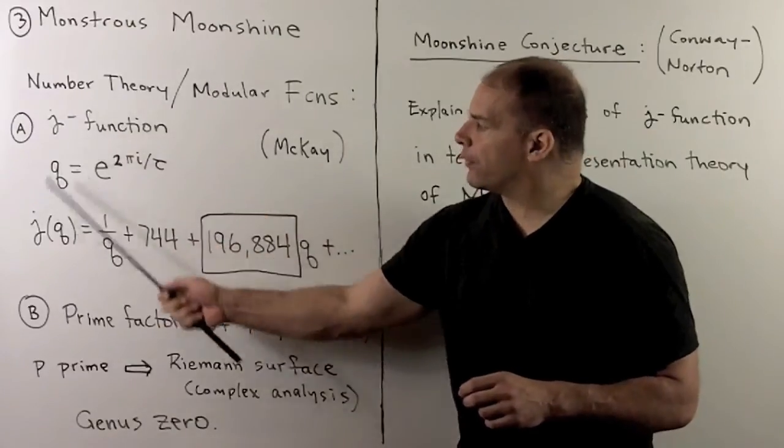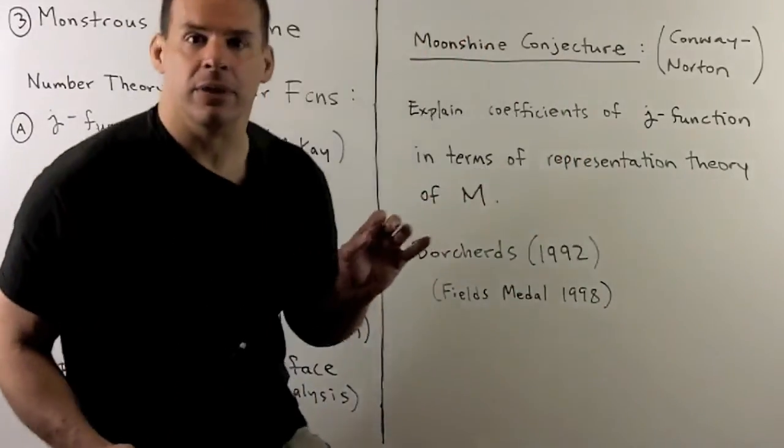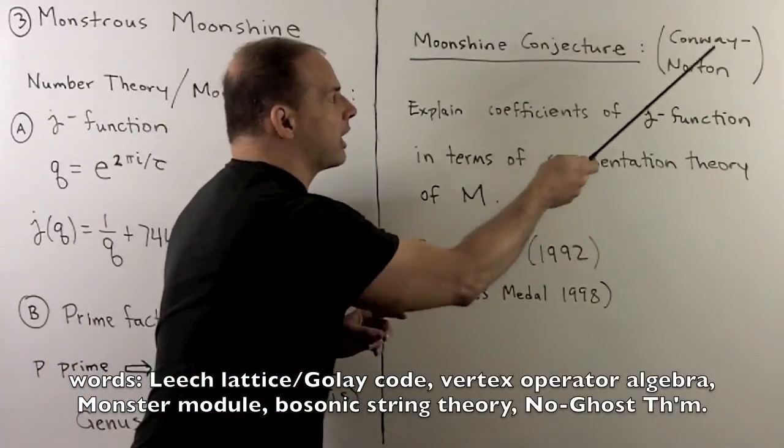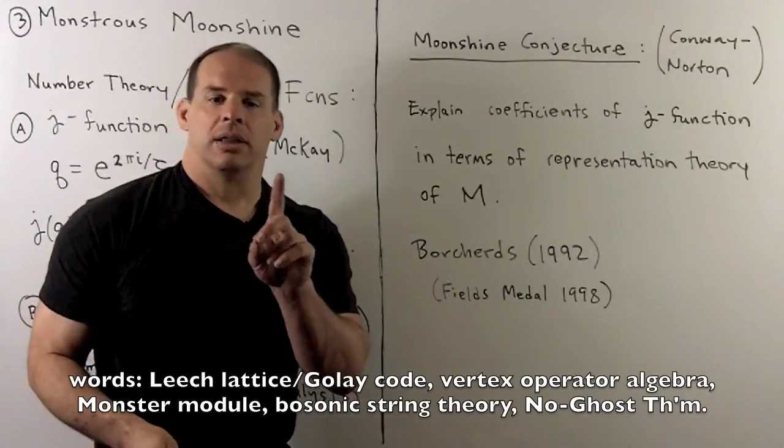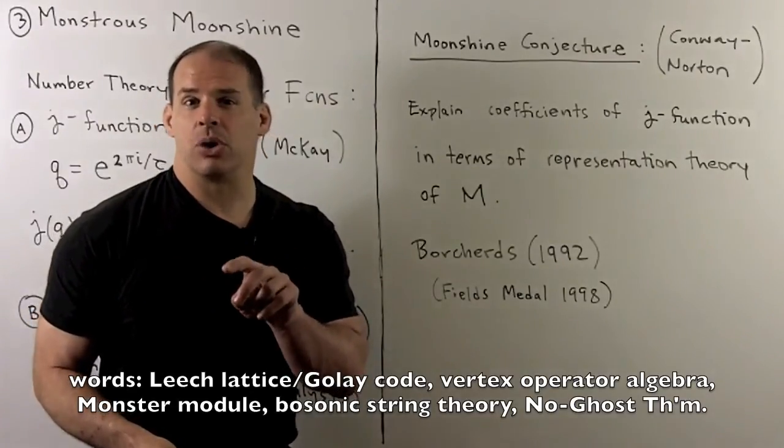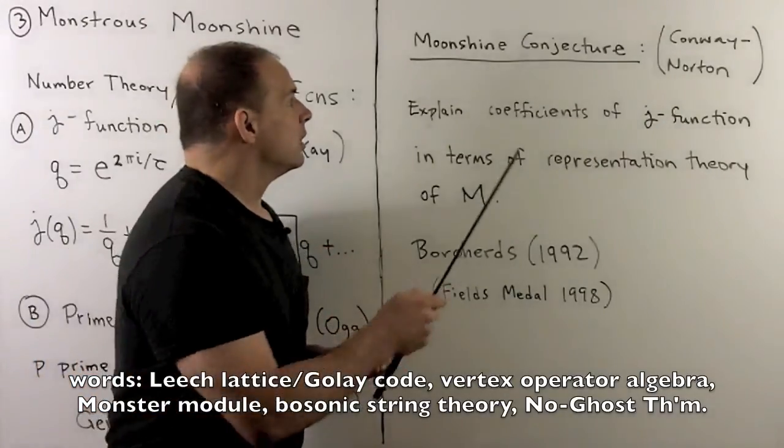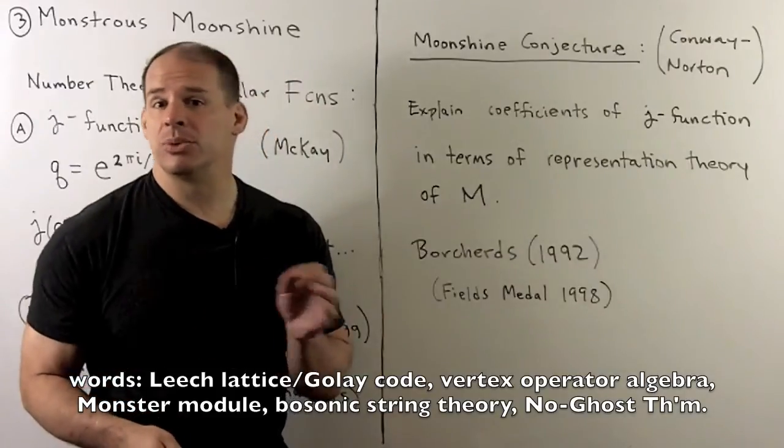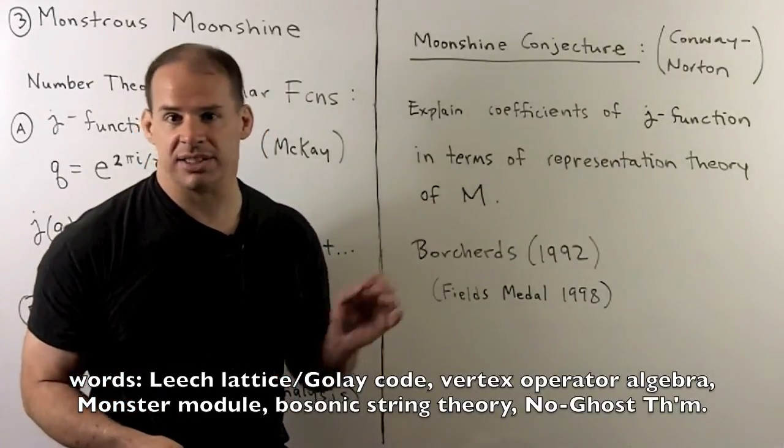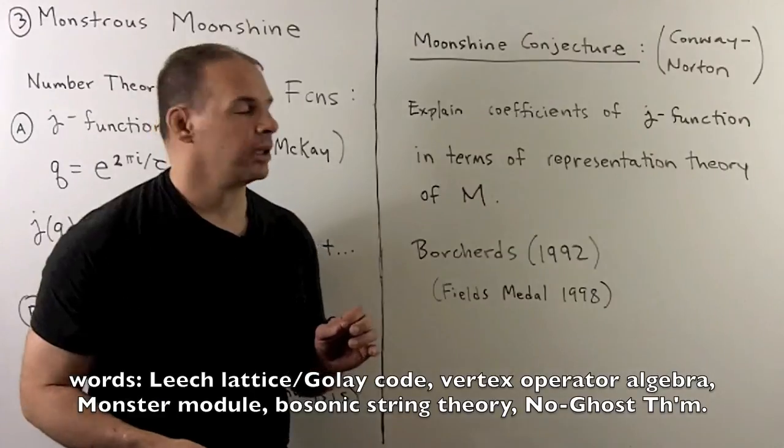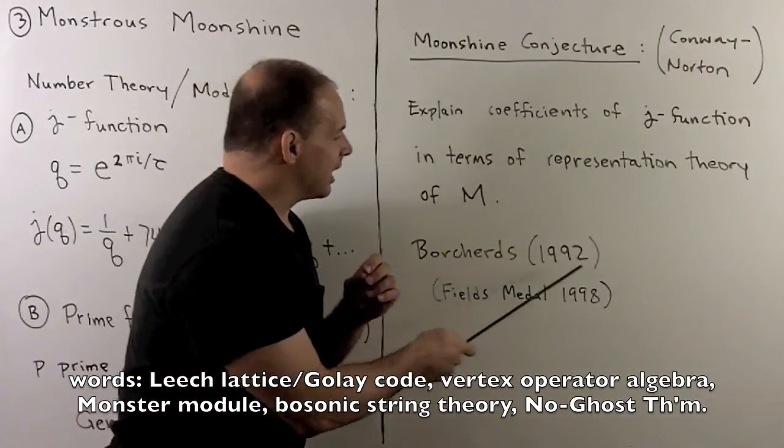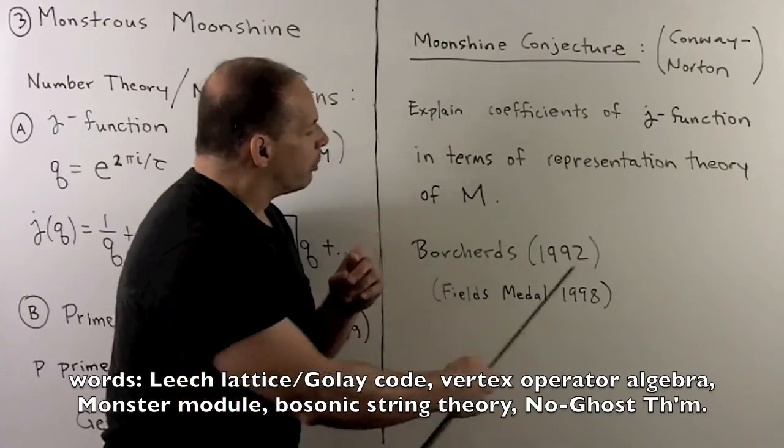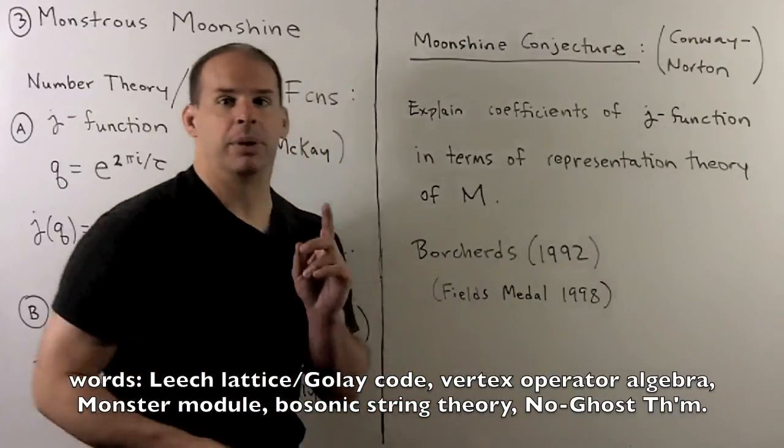Now, for this first part, this goes by the name of the moonshine conjecture, as given by Conway and Norton. Now Conway might recognize this is the Conway of both Conway's soldiers and Conway's game of life. So what the moonshine conjecture does, just explains coefficients of the J function in terms of the representation theory of the monster. And there's a precise statement for that. Now, this is proved by Borcherds in 1992. For his work, he got the Fields Medal in 98. So Borcherds' work is where string theory comes into the picture.